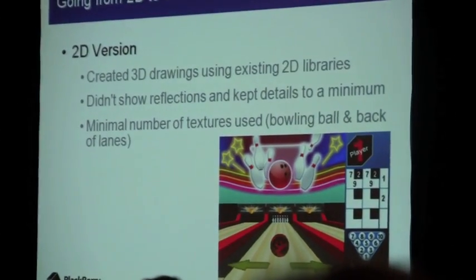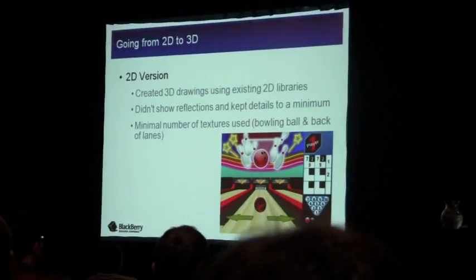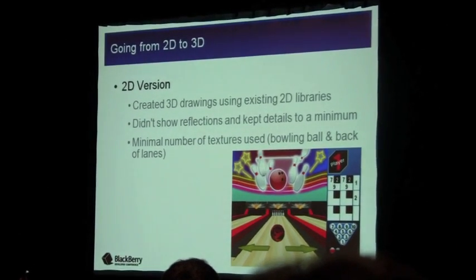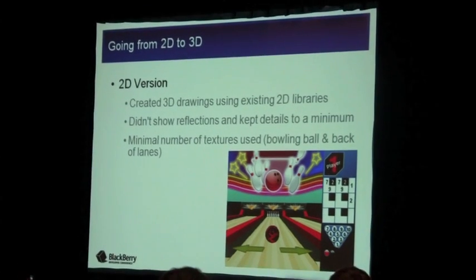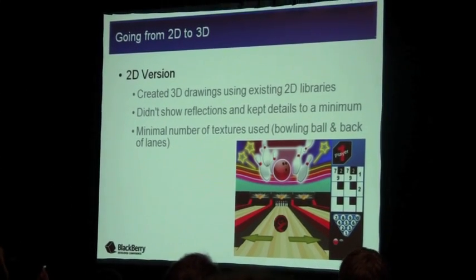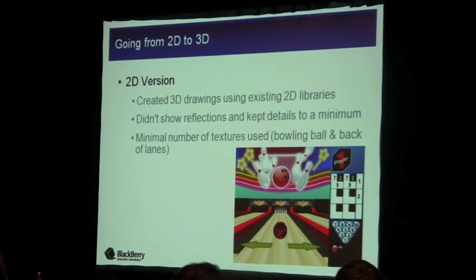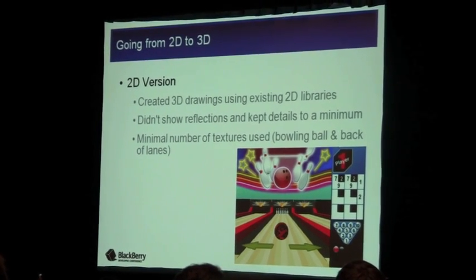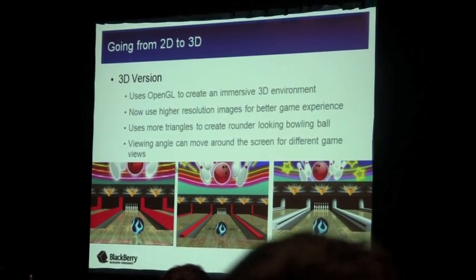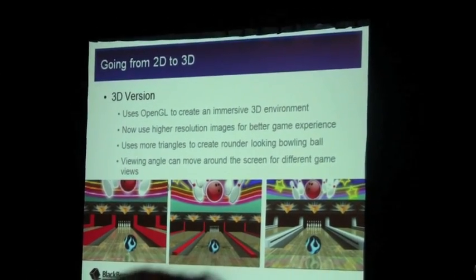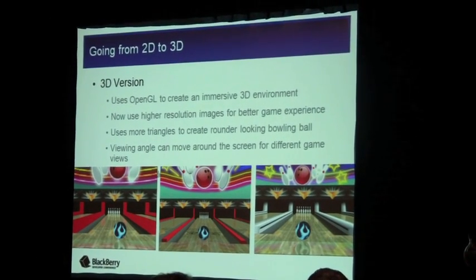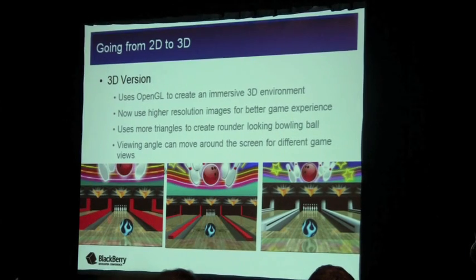The first version we created was a 2D version — we used 2D drawing to create a 3D look. You can really see that the ball doesn't look totally round, there are no reflections, and there's a lot that can be done. These are images of the OpenGL version, and you can see how it progresses from left to right — it's now a much more immersive 3D environment.